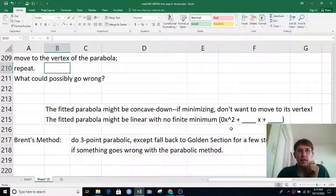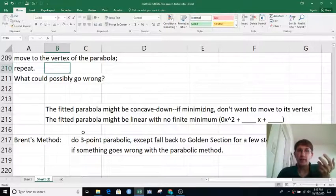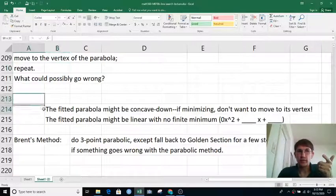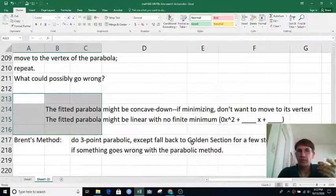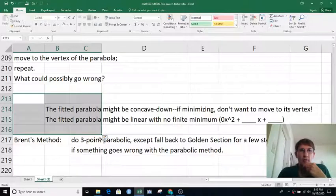So there's a kind of guarded method called Brent's method that's widely implemented in software. It's nothing mathematically fancy. It's just a bunch of bookkeeping. Try three-point parabolic because that's faster than golden section. But if you see something like this happening, then fall back toward golden section for a few steps and then try three-point parabolic again. So a reasonably good idea.